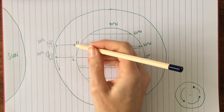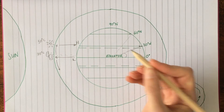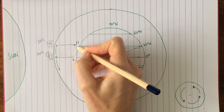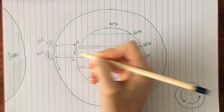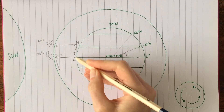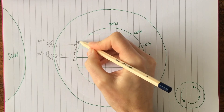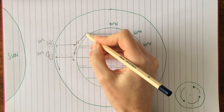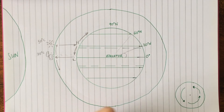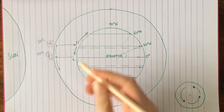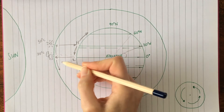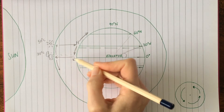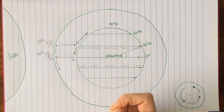The air has sunk down to the Earth's surface and has two options: it can either head south back towards the equator or north in the direction of the poles. You might notice that we have just created a cell — we'll talk about that later.